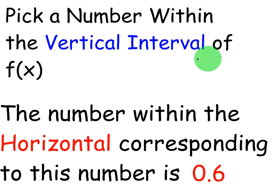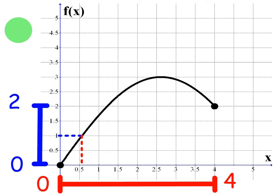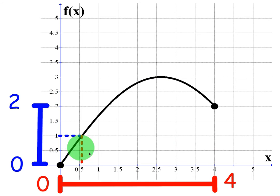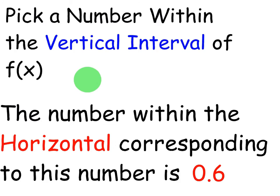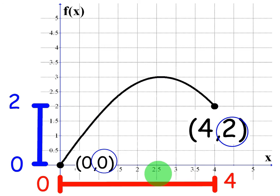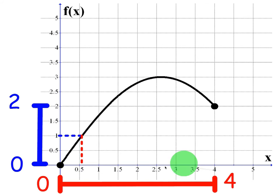Next, we want to pick a number within the vertical interval of f(x). You can pick any number within the vertical interval. I picked 1, because it's halfway between. What you can do is draw a line from that y-value you picked until you hit the graph and then go down. You will go down and figure out what that x-value is. In this case, the number within the horizontal interval corresponding to this number is 0.6. So we basically hit a value that's between our horizontal interval, 0 and 4, based on the y-value we picked.